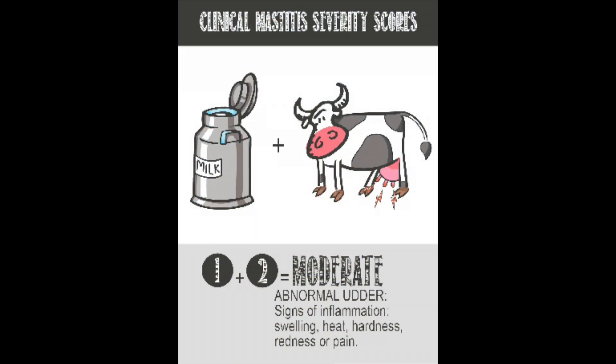For a severity score two case, this is a moderate case of mastitis. In these cases, the symptoms are restricted to the local symptoms of inflammation of the udder. So in a severity score two case, we have abnormal milk and an abnormal udder. The symptoms we might see in an abnormal udder may be swelling, redness, or tenderness of that udder, and these can be detected by the milking technician while they're preparing the cow before attaching the milking unit.